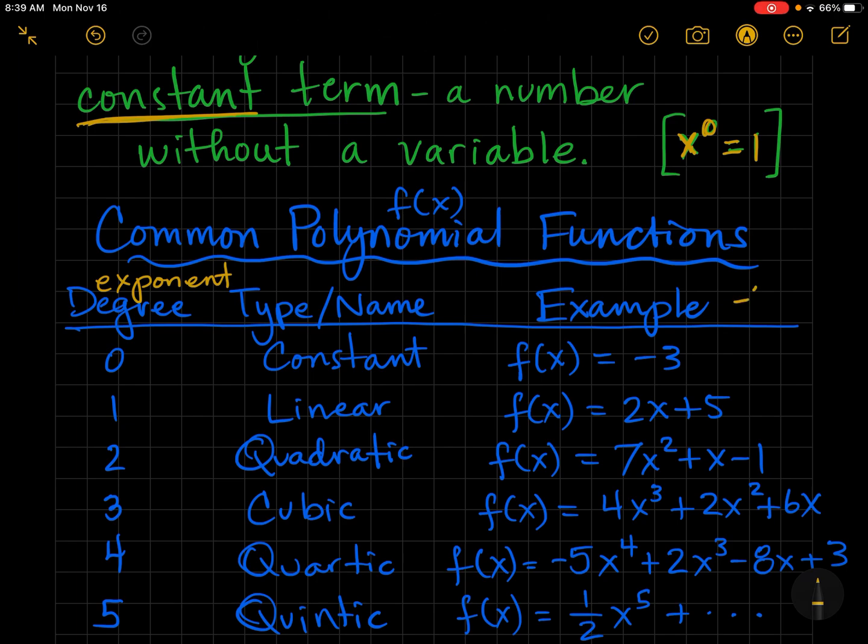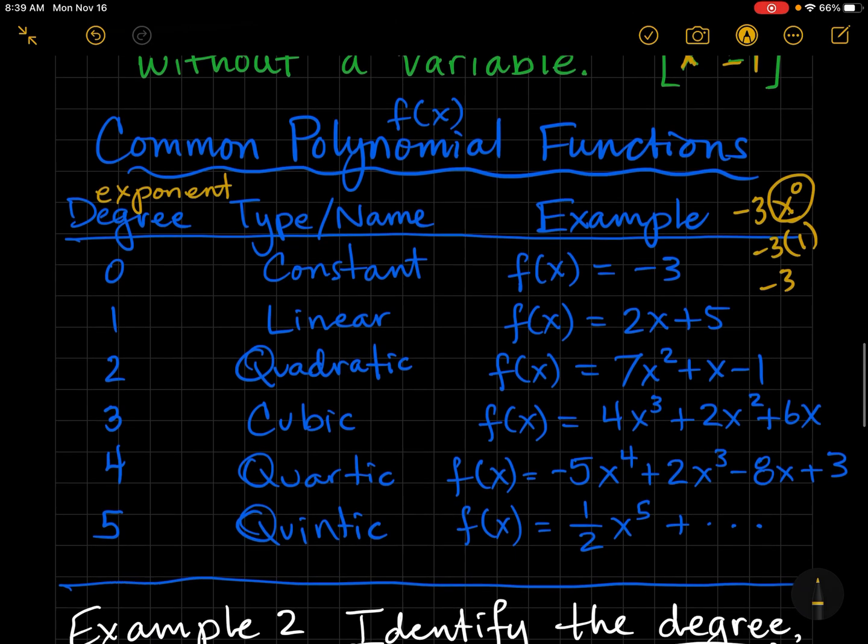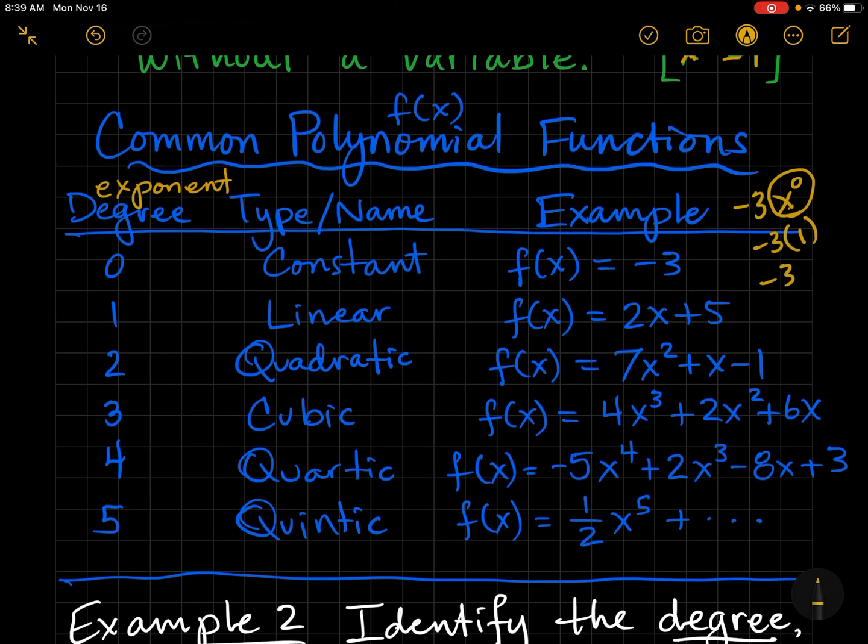So if it appears we have a constant term like negative three, that's really negative three times x to the zero because this equals one. So when we have x to the zero power, we don't even write it.